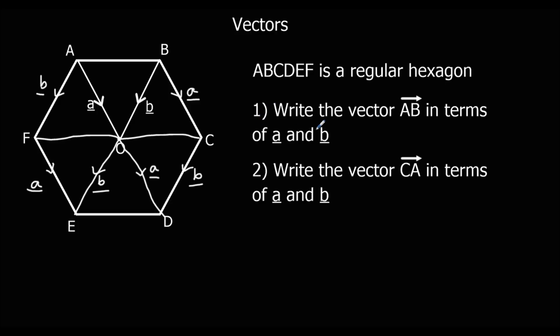So part one says write the vector A to B in terms of a and b. So A to B, I can't go straight along, I don't know what it's called. I'm going to go down to O and back up. So A to B is A to O plus O to B.